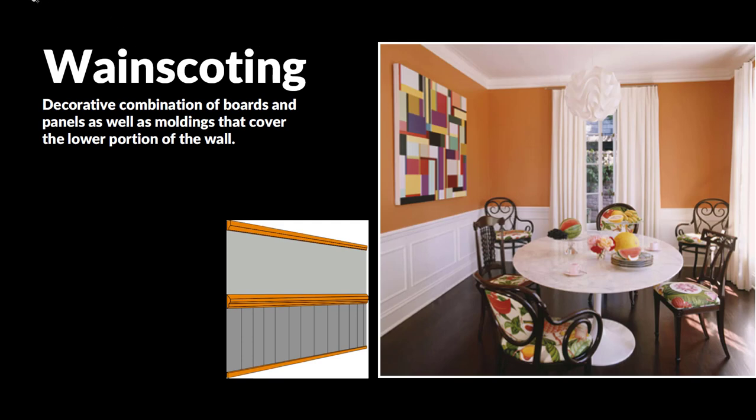We can also have wainscoting. Wainscoting fills in between the baseboard and the chair rail. It's a combination of boards, panels, and different moldings that cover that lower portion of the wall. It often offers a traditional look, although it can be contemporary as well. It really gives a different feel to the room and also acts as a way to protect the room — it's sturdier than the drywall.